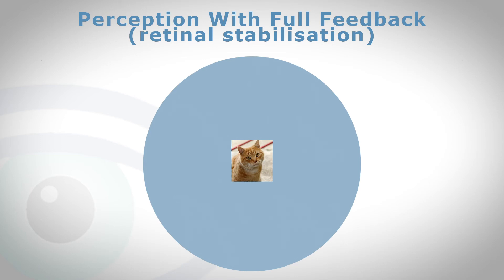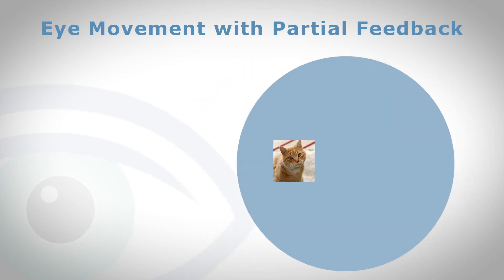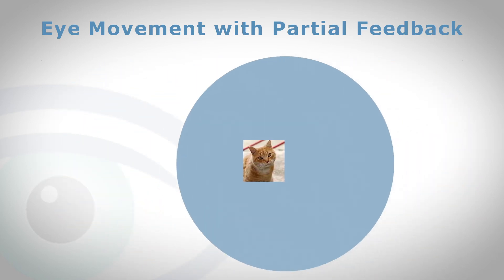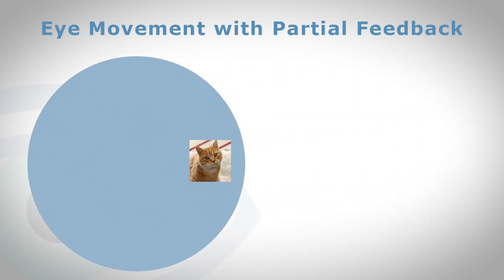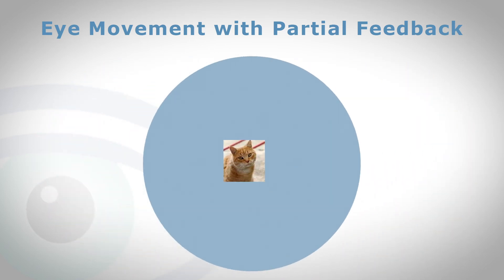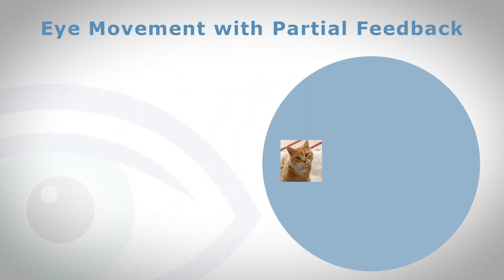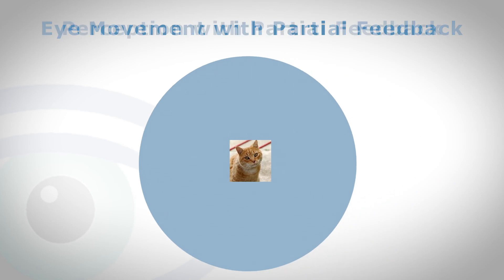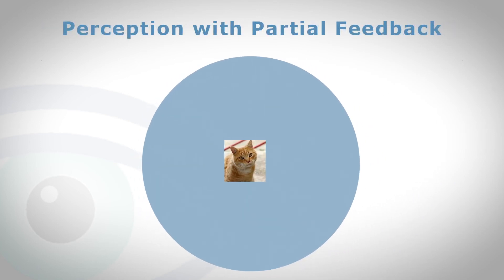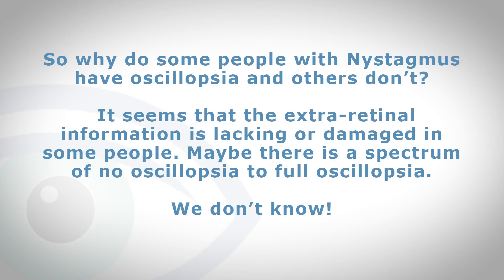So why do some people have oscillopsia and others don't? It seems that the extra-retinal information is lacking or damaged in some people. It's possible that there may be a spectrum of oscillopsia ranging from no oscillopsia to full oscillopsia. But actually, we don't know the answer to this, and the reason we don't know is because no one has ever measured it.